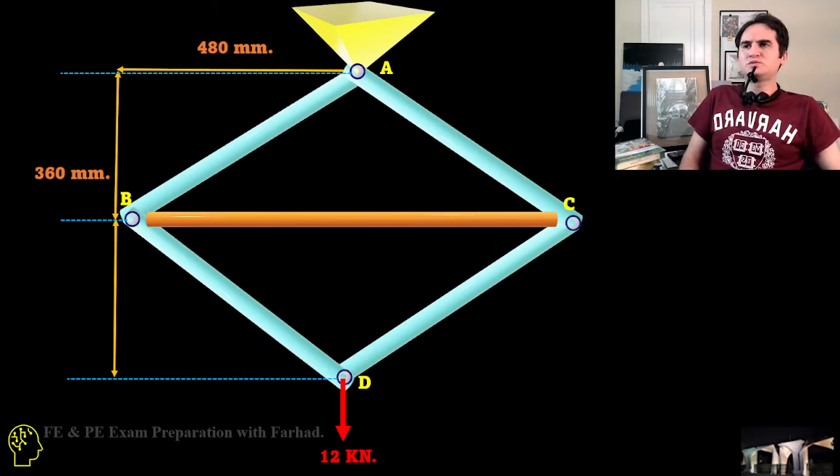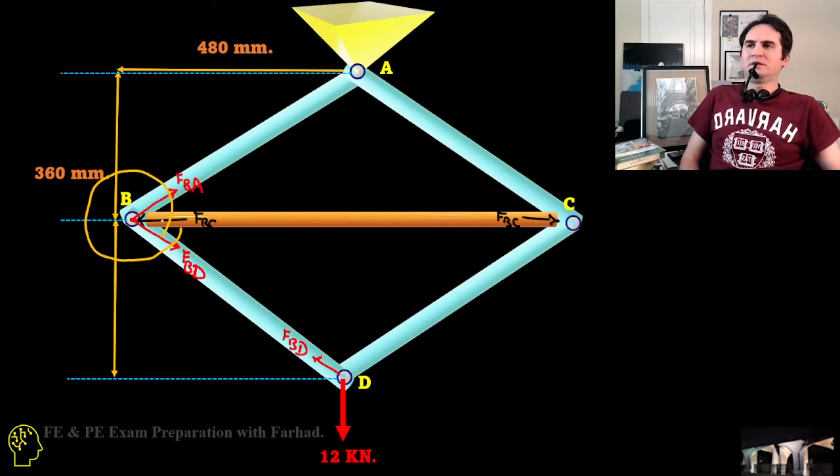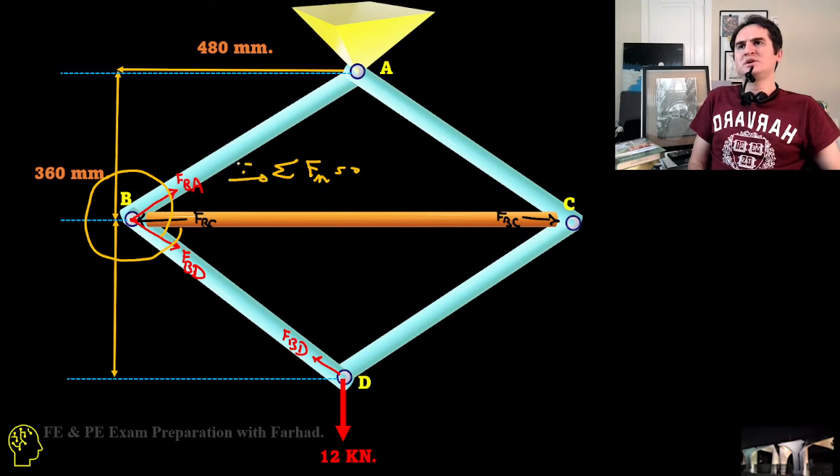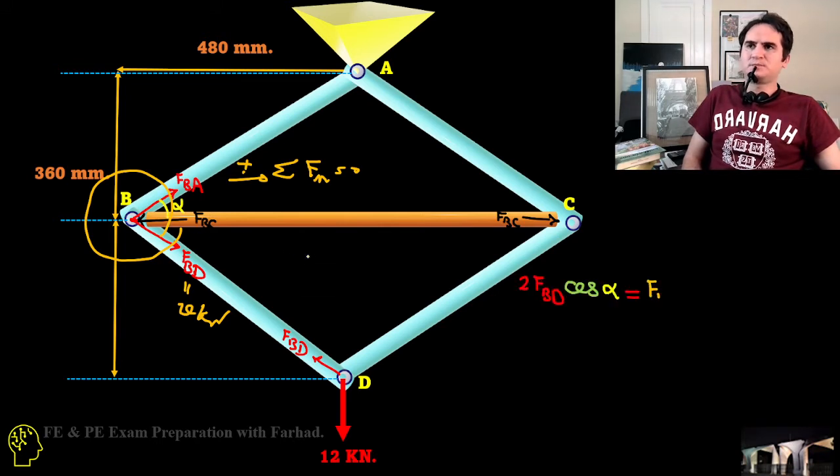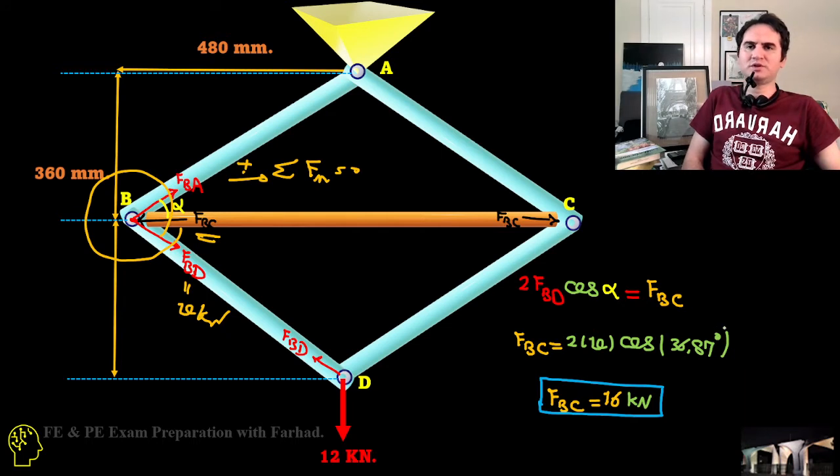If this time goes for a summation of force in X direction for joint B, it just gives us two of FBD, which you already know is 10 kilonewton from previous calculation, should cancel out the force of the chubbier rod at the center. So two force BD cosine of alpha should equal to FBC. In that case FBC is two times 10 cosine of the alpha, and it just gives us FBC is equal to 16 kilonewton.